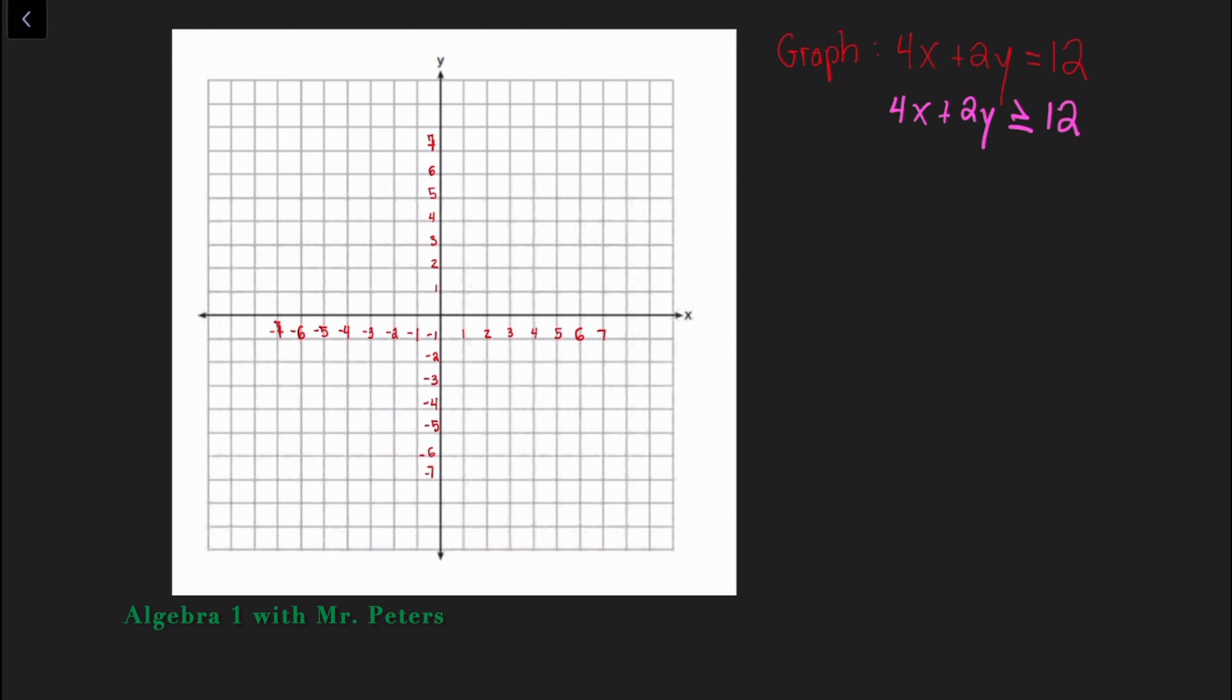Starting this video off we need to understand the difference between standard form which is ax plus by is equal to c and slope intercept form where y is equal to mx plus b. What you see on my screen right now that I'm circling in white, this is standard form.